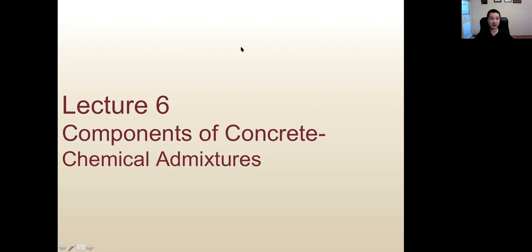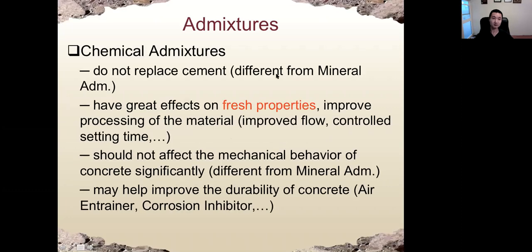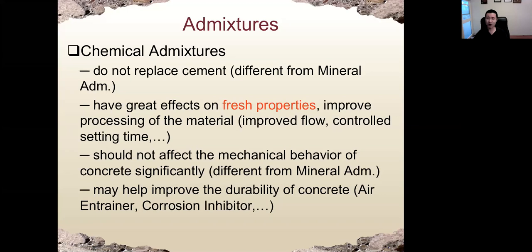Today we're going to discuss another major component of concrete, which is chemical admixtures. Last time we discussed mineral admixtures such as fly ash, silica fume, and slag. The difference between chemical and mineral admixtures: first, chemical admixtures do not replace cement. The dosage of chemical admixtures is very small — for example, we use around 5 to 15 percent for silica fume, 20 to 40 percent for fly ash, but for chemical admixtures we only use sometimes one percent or even less.